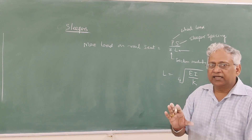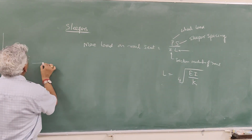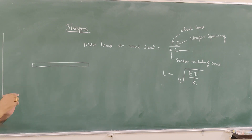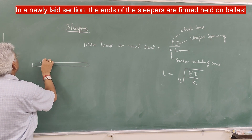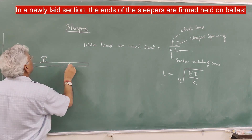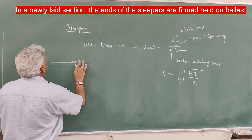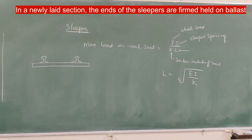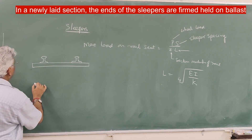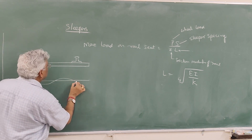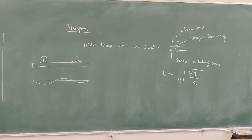In a newly laid section, the ends of the sleeper are firmly held by the ballast. These ends of the sleeper are fully supported, and therefore the deflection of the sleeper will deflect at the center under load, and deflection at the ends will be zero. This is in a newly laid or well-compacted track.